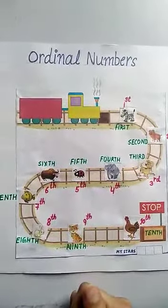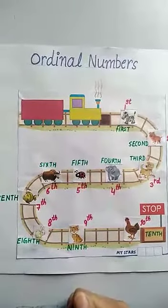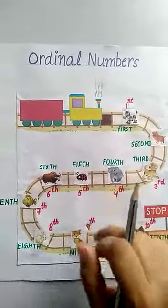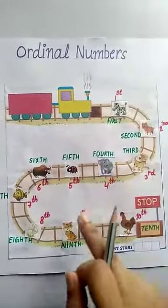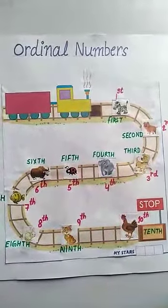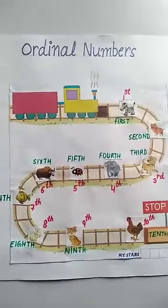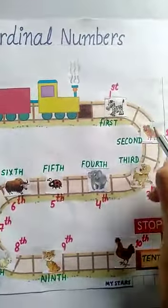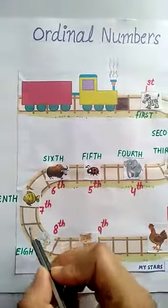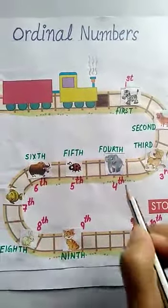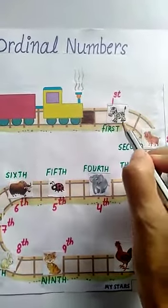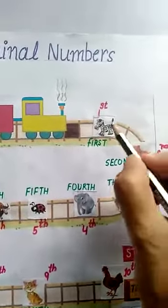Children, we can easily understand this topic with this given picture. Here are some animals shown in the picture. Let's watch their position to catch the train. This is train and these are some animals waiting for their turn to catch the train. So, let's know about their position.